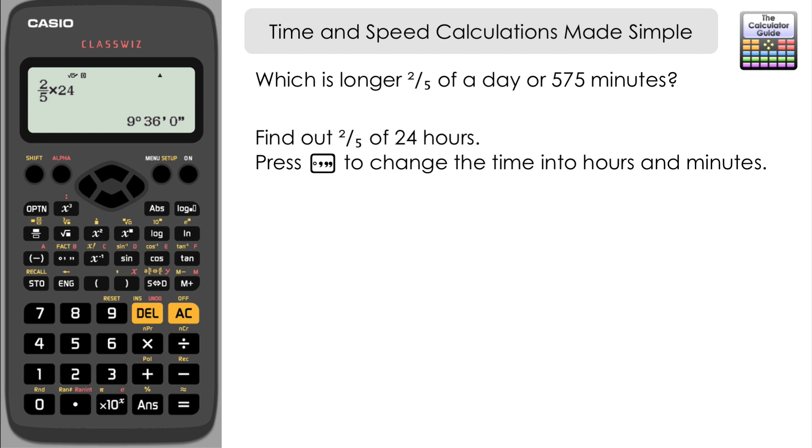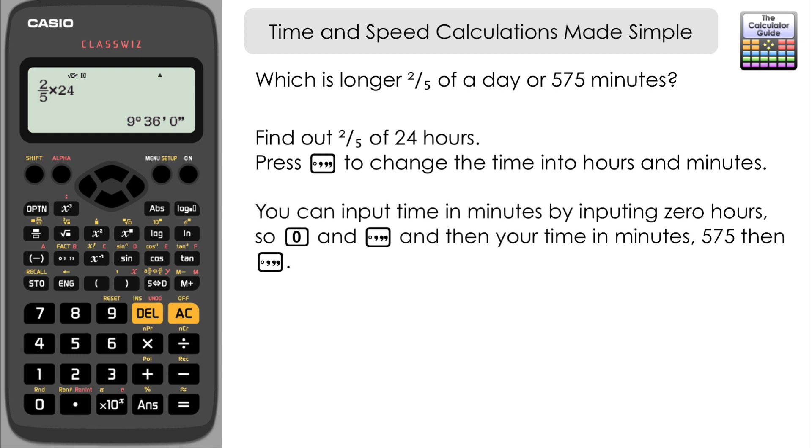We've got to compare that with 575 minutes—is that shorter or longer? What we can do is use the time button to input that and change it from just minutes to hours and minutes so we can compare it. We can say that we've got no hours and 575 minutes. Each time you press the button it refers to a decreasing time unit—hours, then minutes, then seconds. This is displaying no hours, 575 minutes, but will display it in hours and minutes for us. If we press equals, here we have the time 9 hours and 35 minutes. That's slightly less—in fact, one minute less—than two-fifths of a day which was 9 hours 36 minutes. So two-fifths of a day is longer.